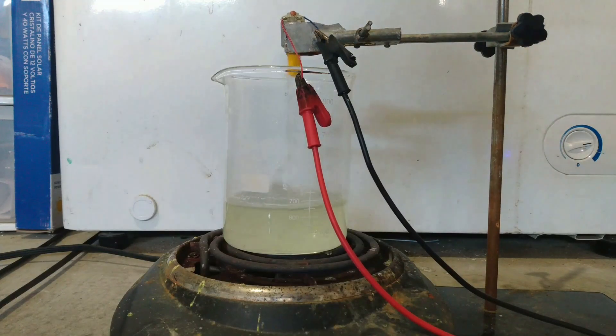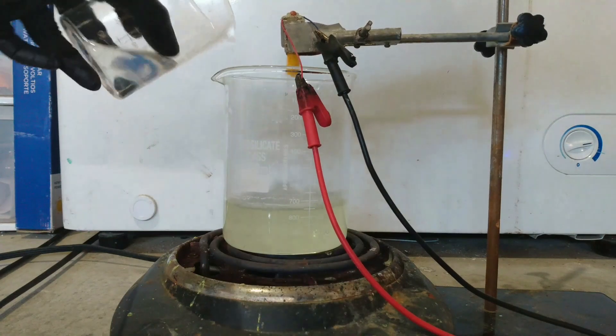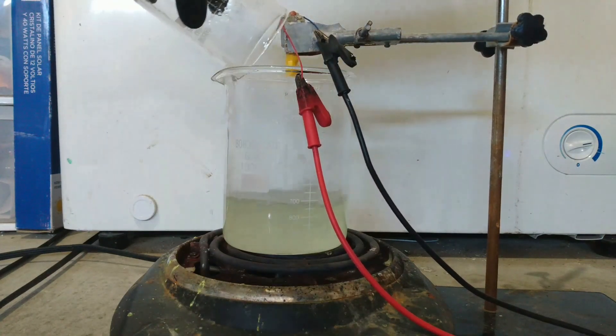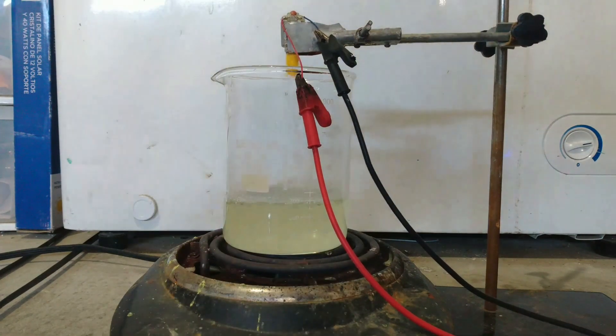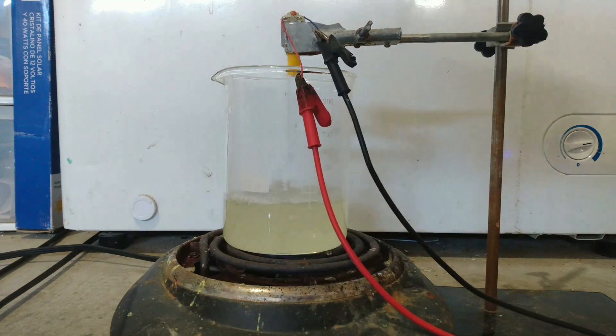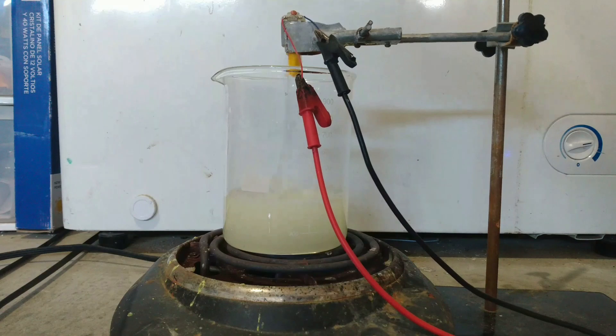For this next step we are going to need strong stirring. I assembled an improvised overhead stirrer with a motor and a spoon. In one whole go we will add the urea and gelatin solution to the bleach. This can foam a lot and in some cases could overflow.